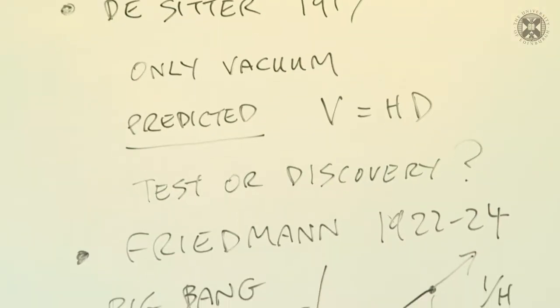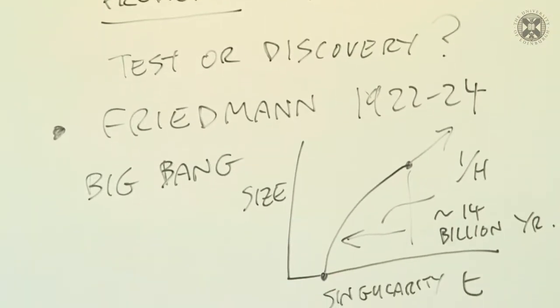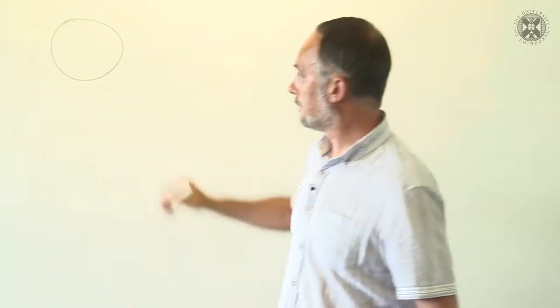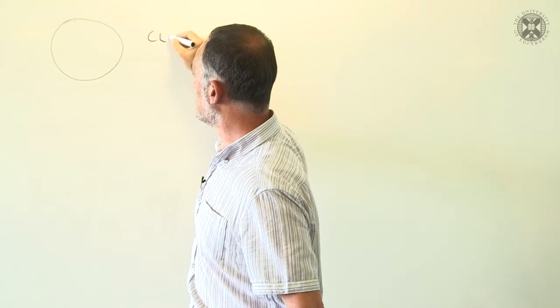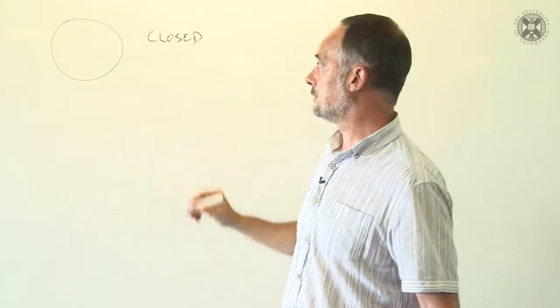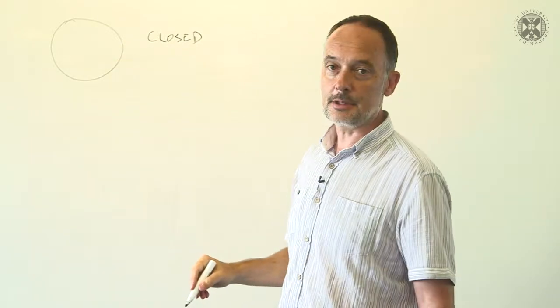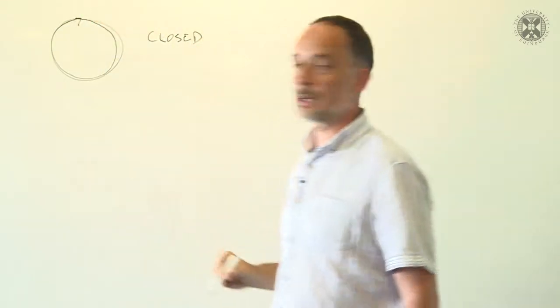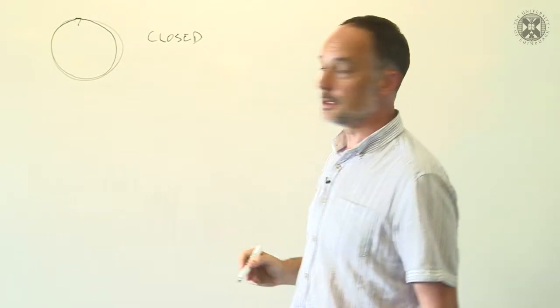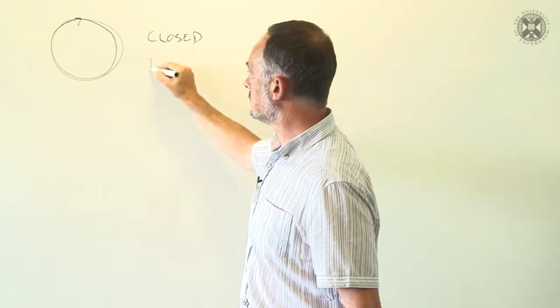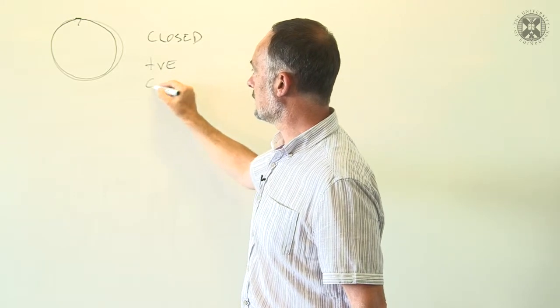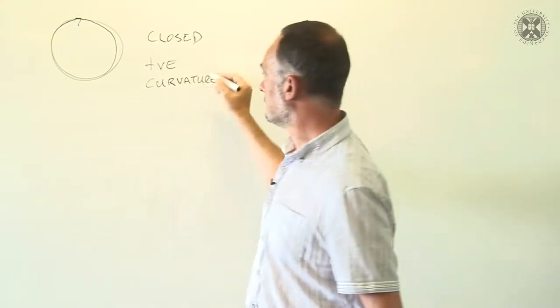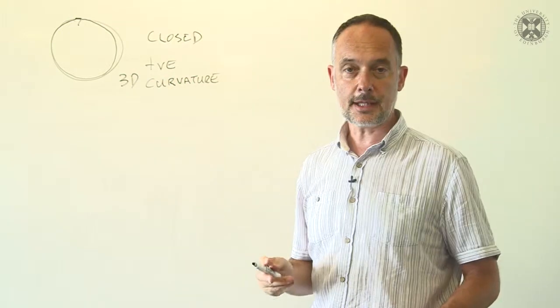The other remarkable conclusion of Friedman's work was that the matter content of the universe affected its curvature. Think about the Earth. This is what would be called a closed surface, by which I mean that it's finite, you can walk around it forever, you never come to a boundary, but you come back to your starting point. So the universe can be closed and have what's called positive curvature.